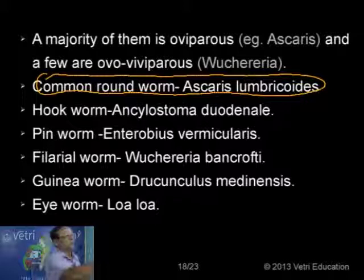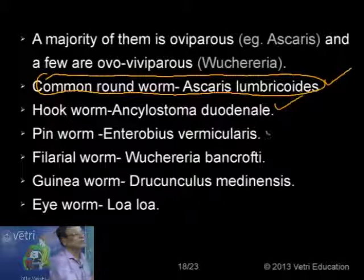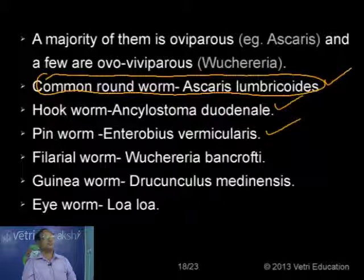The next one is the hookworm, Ancylostoma duodenale — it is also an intestinal worm. The third one, the pinworm having a small hook-like structure at the posterior end, is Enterobius vermicularis — also an intestinal worm. So the first three are intestinal parasites found living in the human intestine.